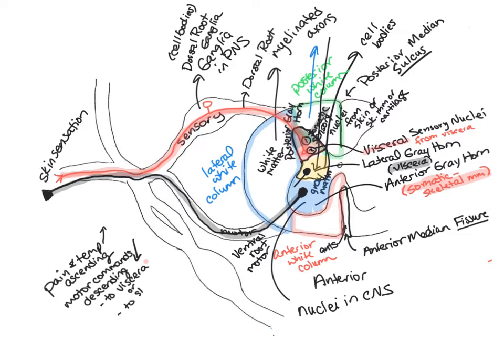Any type of sensory information — pain, temperature, vibration, or any sensation — always enters through the dorsal root. Sensory information from skin or skeletal muscles synapses in the somatic nuclei of the posterior gray horn, while input from the viscera synapses in the visceral area of the posterior horn. That then synapses onto an interneuron that may ascend to the brain.